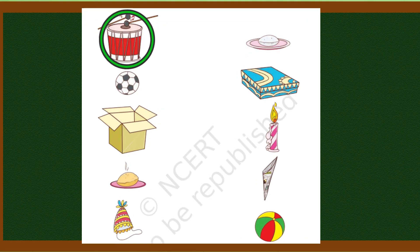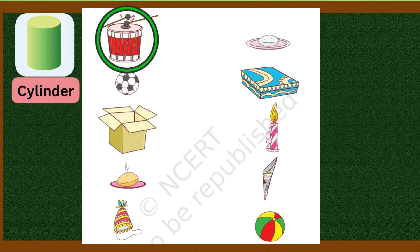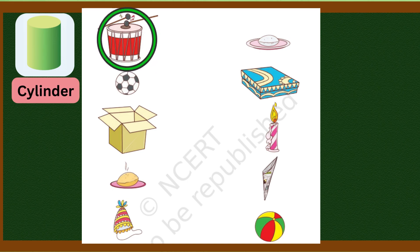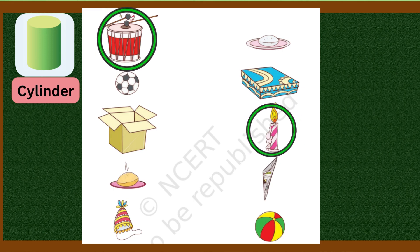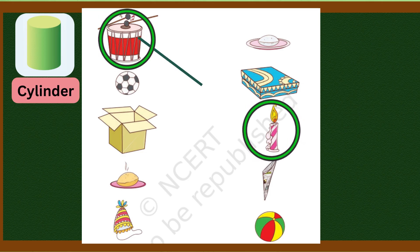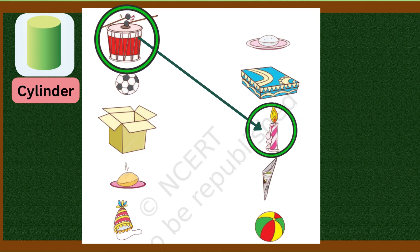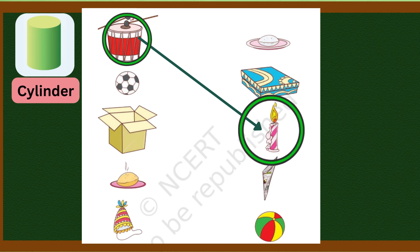First we have drum here. The drum's shape that I have drawn is called cylinder shape. What shape? Cylinder shape or cylindrical shape. The drum has a cylindrical shape. And here you can see a candle. The candle's shape is also cylindrical. That's why we will match this with this. You have to remember the shape's name and what shape looks like this.